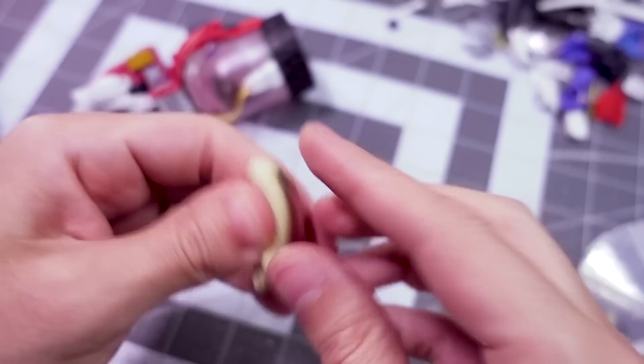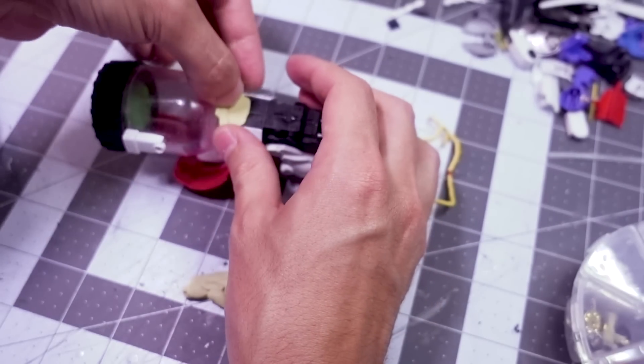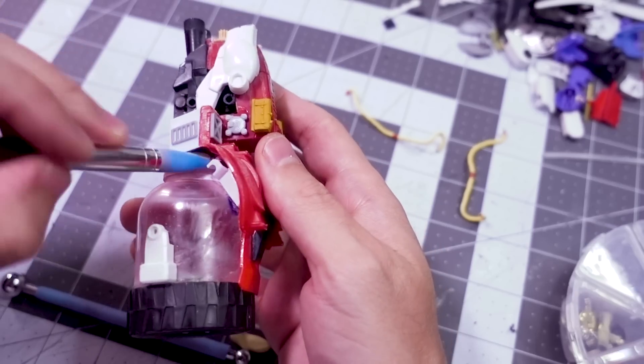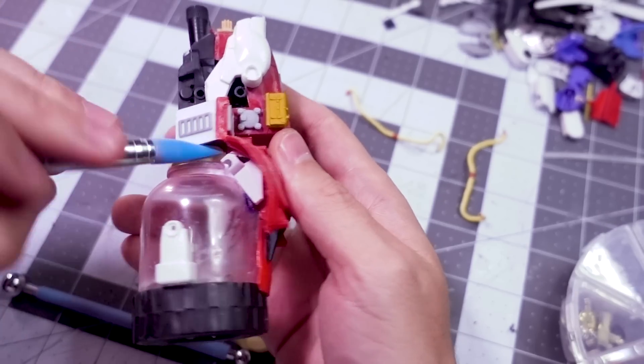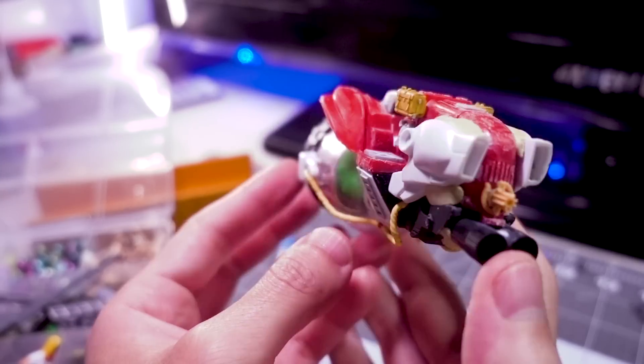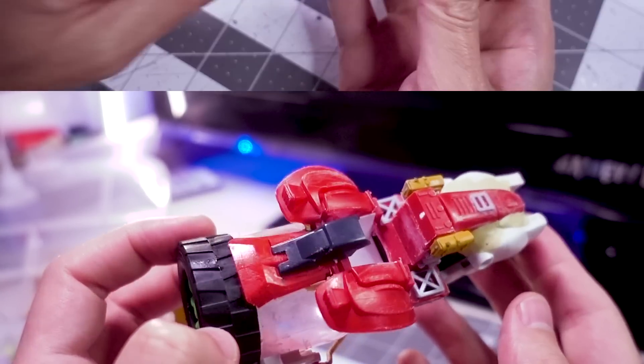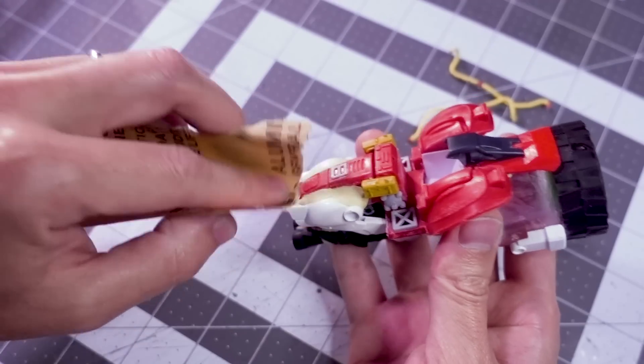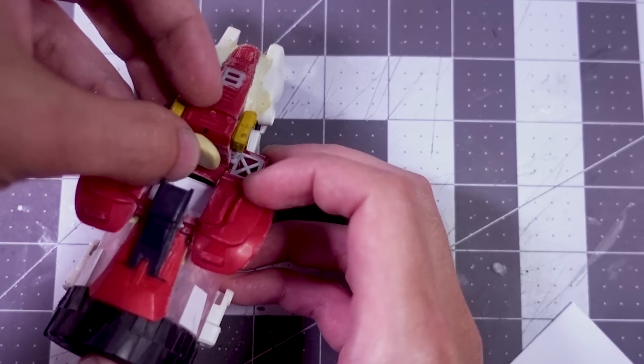Next came some experimentation with a brand new material, Milliput. With a texture similar to soft polymer clay, it's great for filling cracks and hiding seams, but the advantage with Milliput is that there's no need for curing with heat. Just leave it alone for a few hours, and it's hard and ready for sanding.